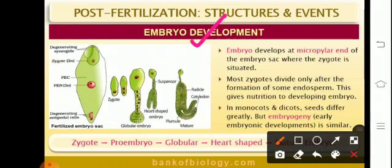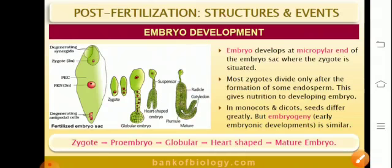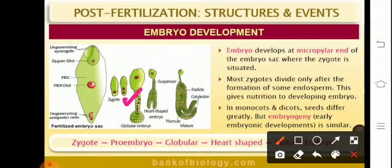Moving on to the development of embryo in dicots. The development of embryo in Capsella was first discovered by Hanstein. In angiosperms, after fertilization the zygote is formed and it undergoes a resting stage until the endosperm develops. The zygote then absorbs food from the endosperm, increases in size, forms a wall layer around itself — this is referred to as the oospore. The oospore divides transversely, resulting in two cells: the cell towards the micropyle is the basal or suspensor cell, and the cell towards the chalazal end is the apical, terminal or embryonal cell. Both cells divide simultaneously.